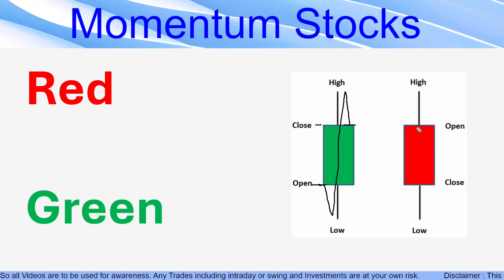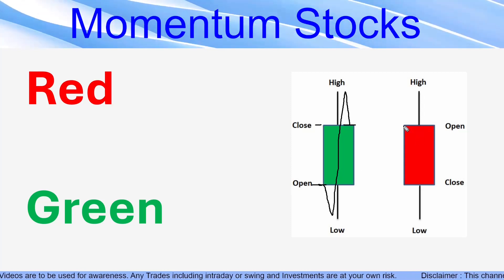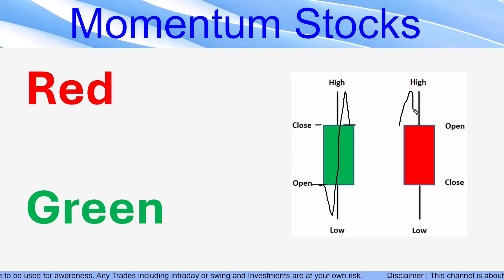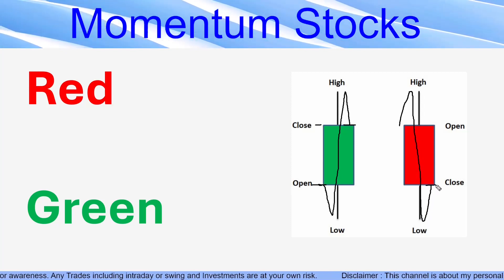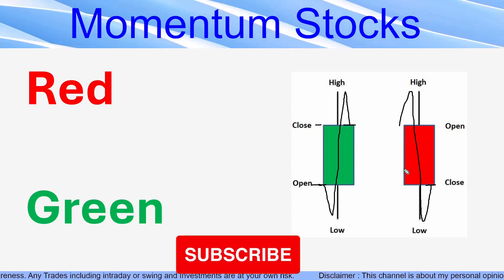And in this case, open is here. So stock opened here, made a high, went down and finally closed here. So that is the reason it is in red color.